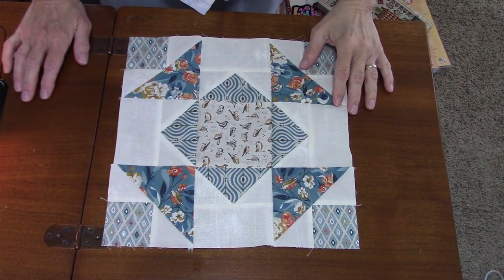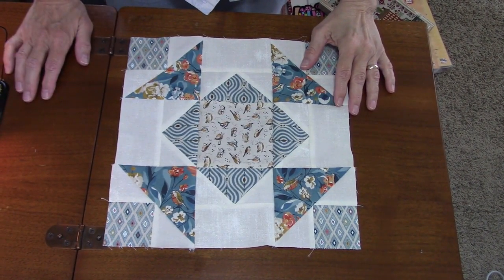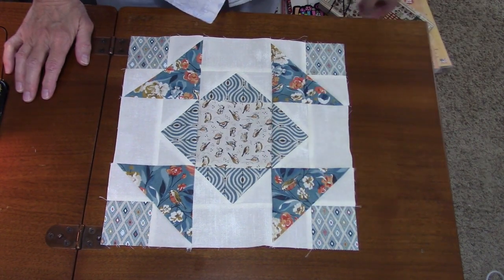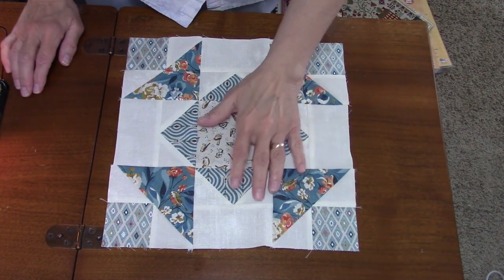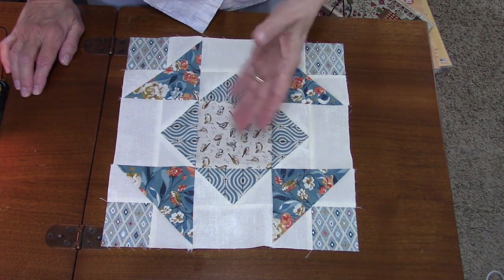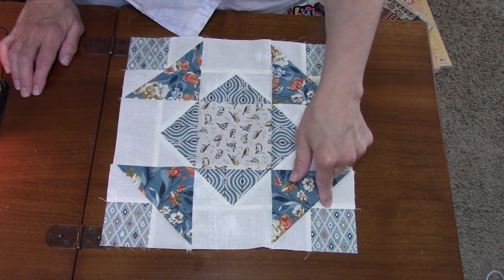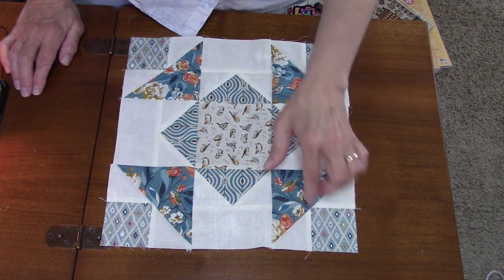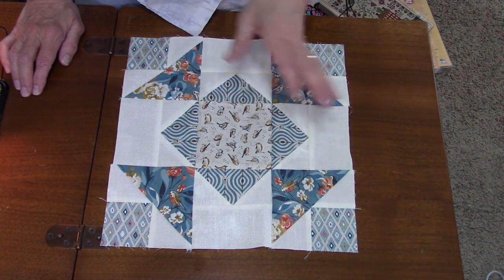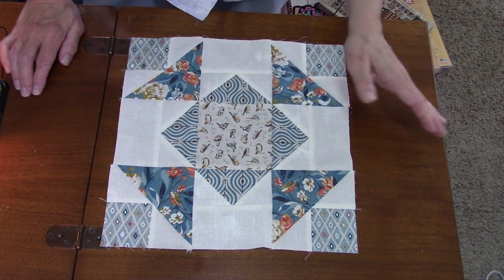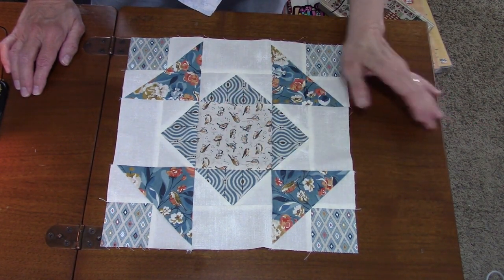So here is the completed block. I think it turned out pretty well. These little corner units here can be a little confusing, but basically it's just sewing triangles onto a square and then sewing that unit onto a larger triangle and then just trimming it down so that it is the four and a half inch square that you need.